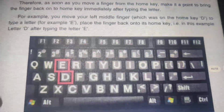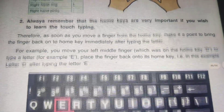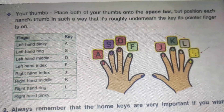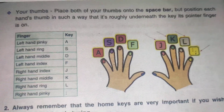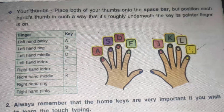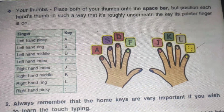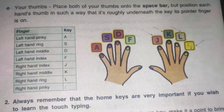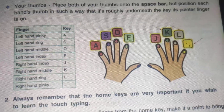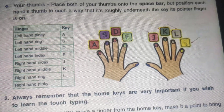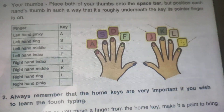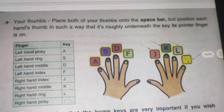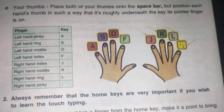Then look at page number 39. Place both of your thumbs on the space bar. Position each hand's thumb in such a way that it is roughly underneath the key its pointer finger is on. In this way we will place our thumb on the space bar key.